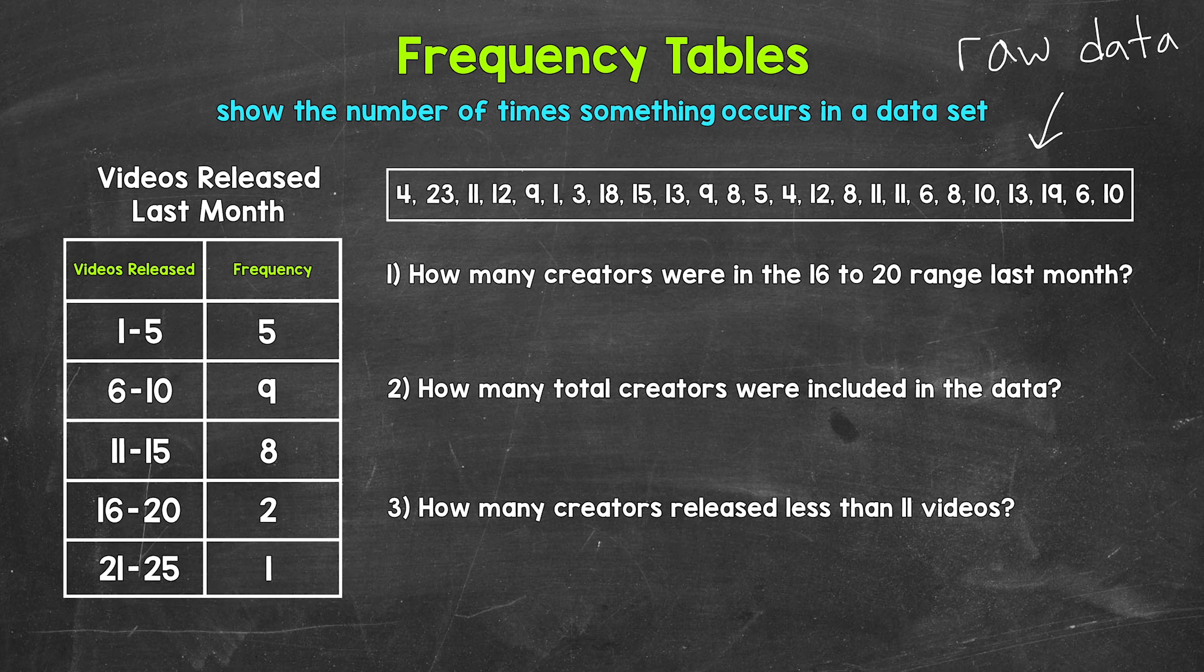A frequency table will help us organize everything. And our table is right here to the left. Now the left column of the table, so this column going down right here, that's the number of videos released. So we have 1 to 5 videos, 6 to 10 videos, 11 to 15 videos, 16 to 20 videos, and then 21 to 25 videos. Now these groups are called classes or class intervals. Since we have these classes, these groups, this is called grouped data.